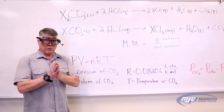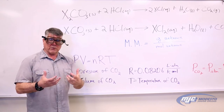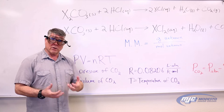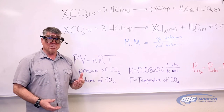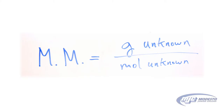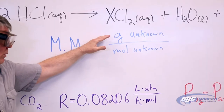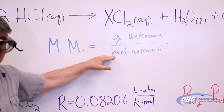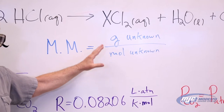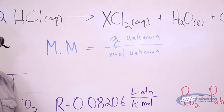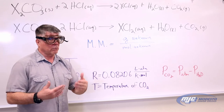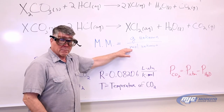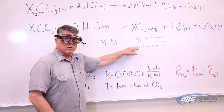Your goal is to figure out the molar mass of your unknown. Molar mass is grams over moles, so you need to know how many grams of your unknown you have and how many moles. The grams is easy — we're going to weigh it and you have that right away. The rest of the experiment is figuring out how many moles of your unknown carbonate you weighed out.